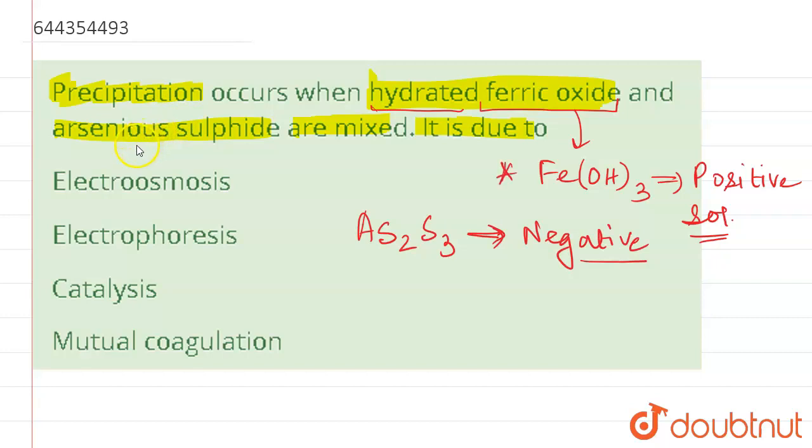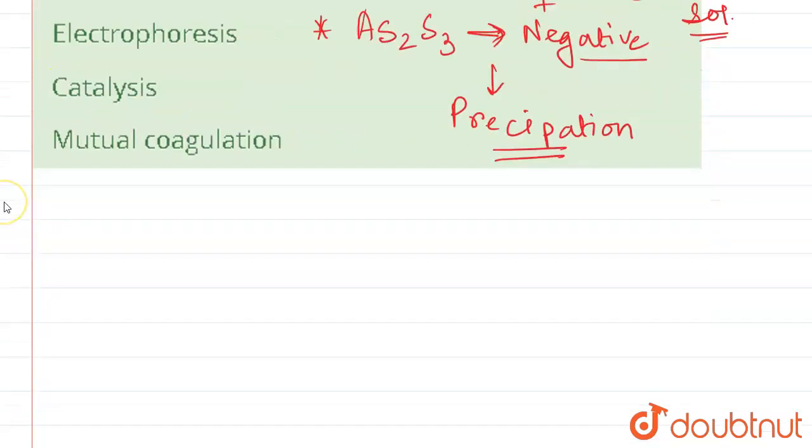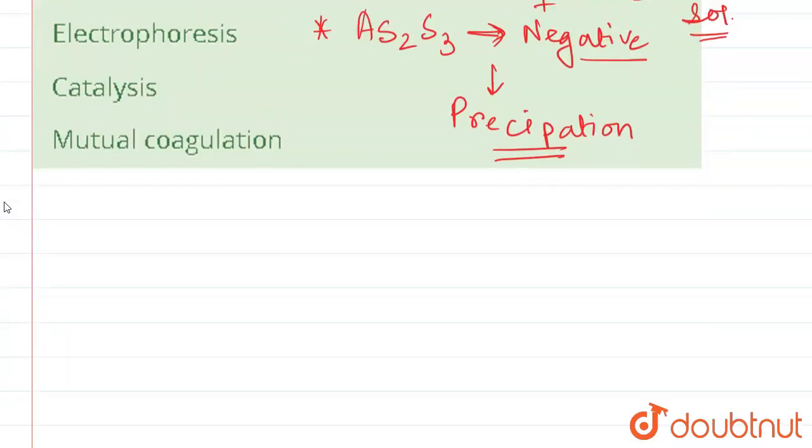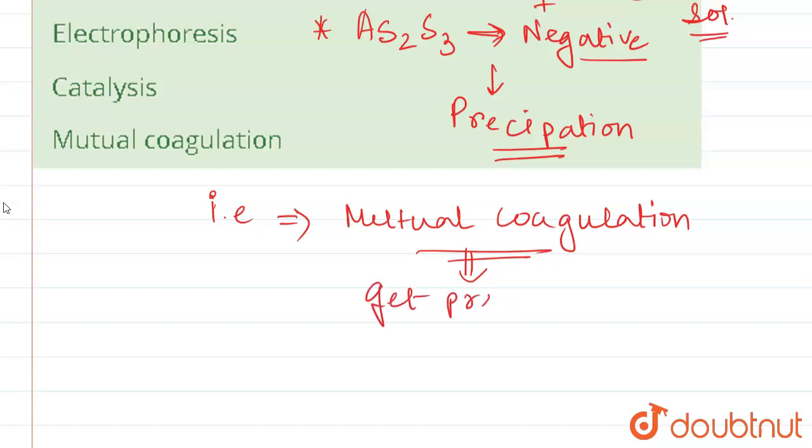So these two positive salt and negative salt are mixed and we get a precipitation in the solution. So how do we get precipitation? When there is a displacement of ions, mutual displacement or mutual coagulation. That is the possible one and only mutual coagulation.